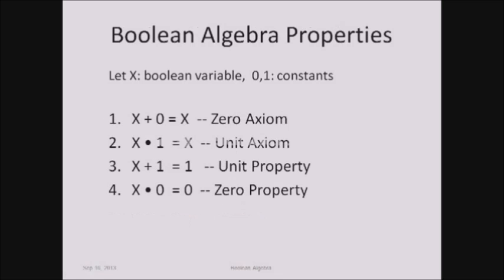To verify all these properties, just substitute 0 and 1 in place of x. For example, for x OR 0 = x: substitute 0 to get 0 OR 0 = 0, then substitute 1 to get 1 OR 0 = 1. The output matches the value of x in each case, and this is how you verify Boolean properties.